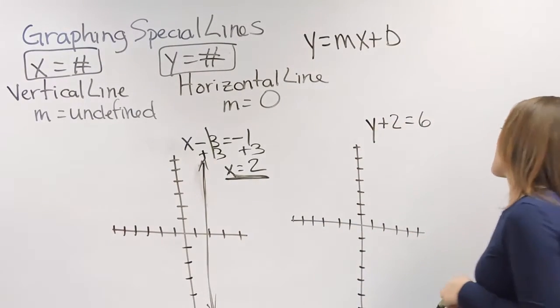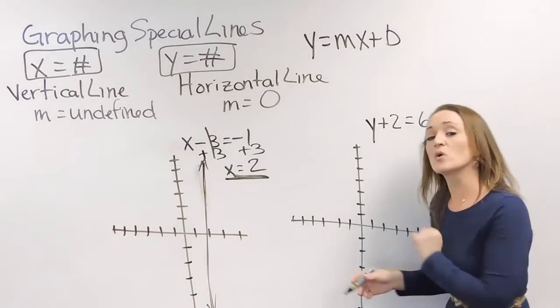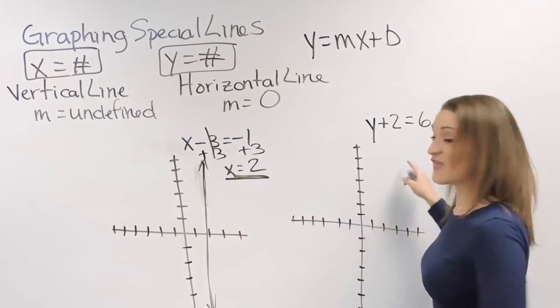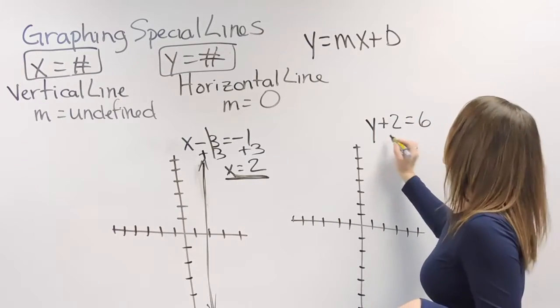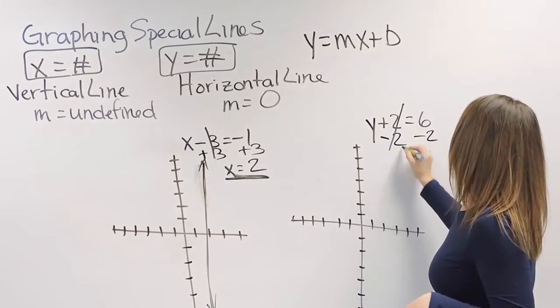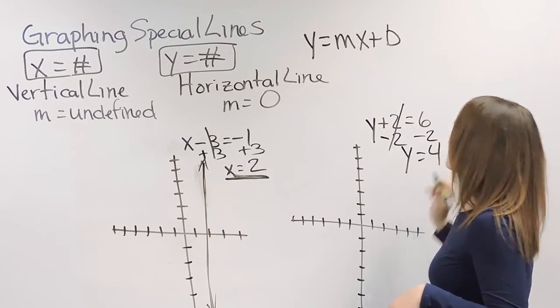Taking a look at the second example that I have over here, this is a y equals, so I know it's going to be horizontal. So let's first work on getting that solved for y. So here we need to subtract 2 from both sides, and we get that y is equal to 4.